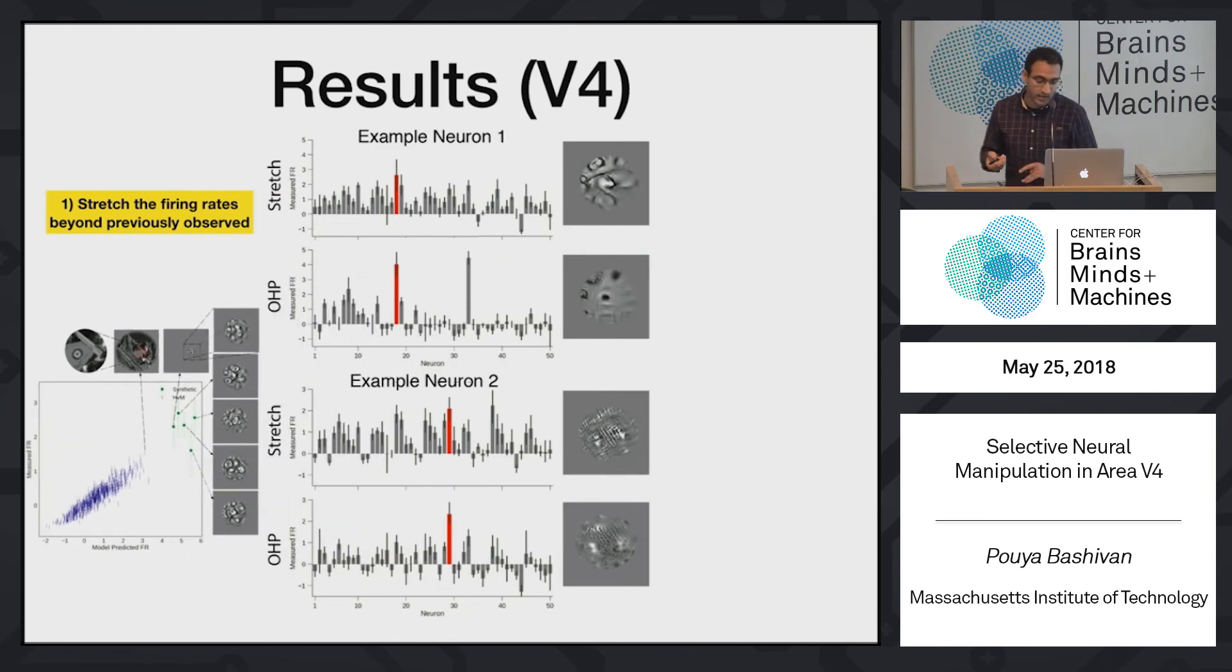Now let's move to the second aim that we had, which was basically driving each neuron individually. So here I'm showing you responses of 50 recorded neurons to these images. So basically, these are two procedures that we talked about, the stretch. And this is the second one, we call it OHP. This is the image that was synthesized for this particular neuron in red. And this is a similar procedure, OHP.